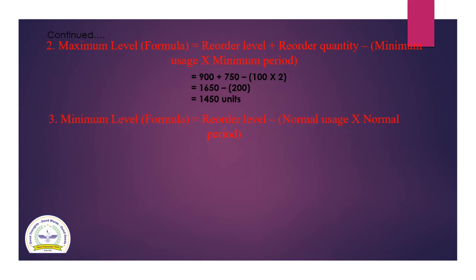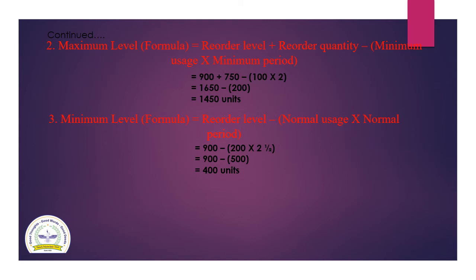Let us take the next level — minimum level. The formula is: re-order level minus (normal usage multiplied by normal period). Placing the values: 900 units minus (200 units multiplied by 2.5 months) equals 900 minus 500, and the answer is 400 units.